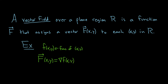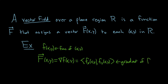Recall, the gradient takes a point x, y in the x, y plane and turns it into a vector. The first component of the vector is the partial derivative of f with respect to x, and the second component is the partial derivative of f with respect to y. So that is the gradient of f.